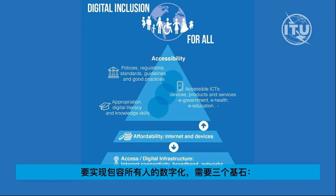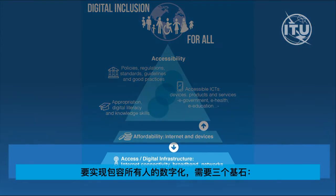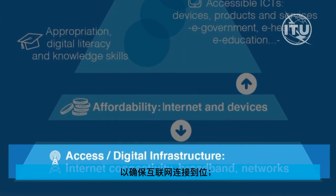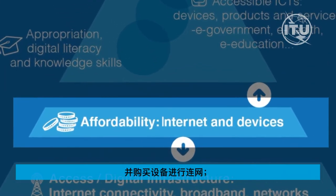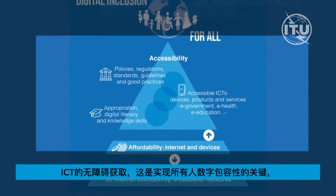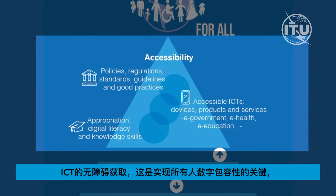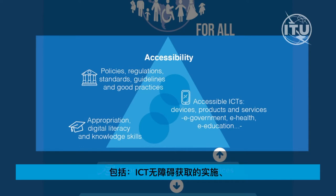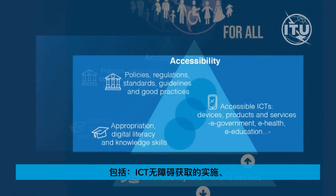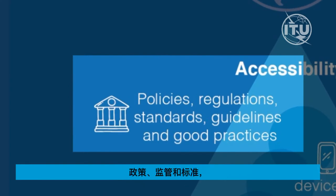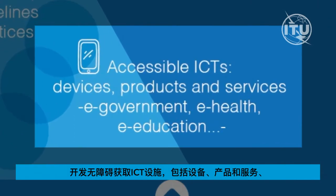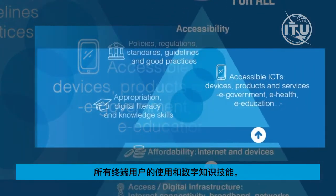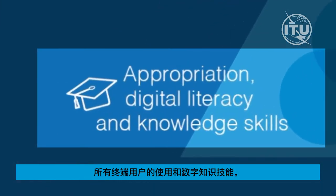Three building blocks are needed to achieve digital inclusion for all. First, access and digital infrastructure to ensure internet connectivity is in place. Second, affordability, so that users can afford internet access and buy devices to connect. Third, accessibility of ICTs, which is key to fulfilling digital inclusiveness for all people, and encompasses implementation of ICT accessibility policies, regulations, and standards, development of accessible ICTs including devices, products, and services, and appropriation and digital knowledge skills by all end users.